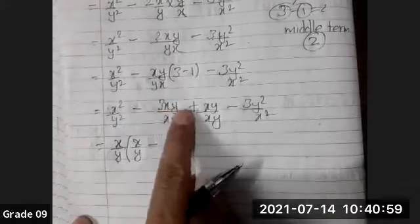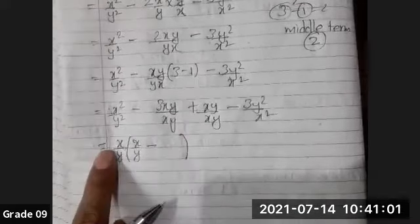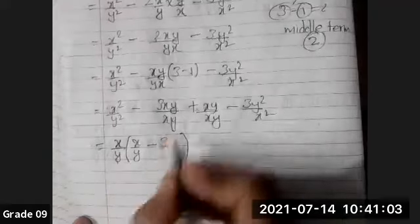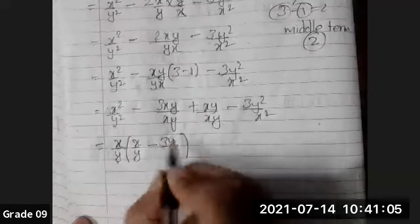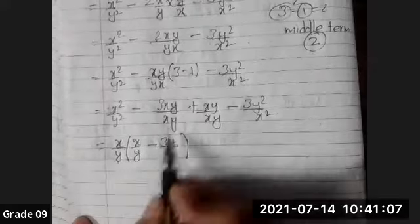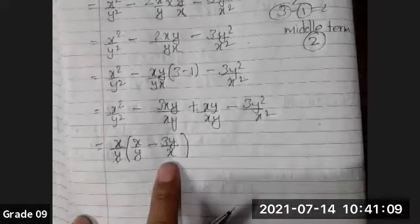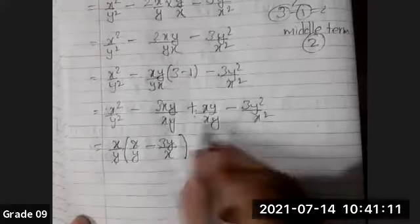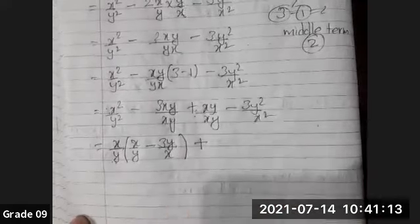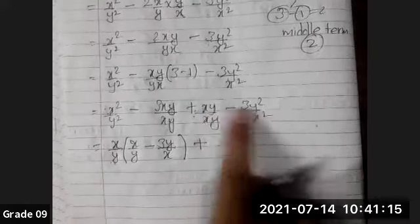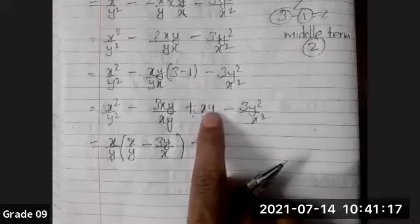This is the way. For plus and minus, I'm taking plus as the common, and I'm seeing the lowest thing to be taken common. Out of xy and 3y², what is common? y is common. Similarly, in the denominator, I'm taking the common.